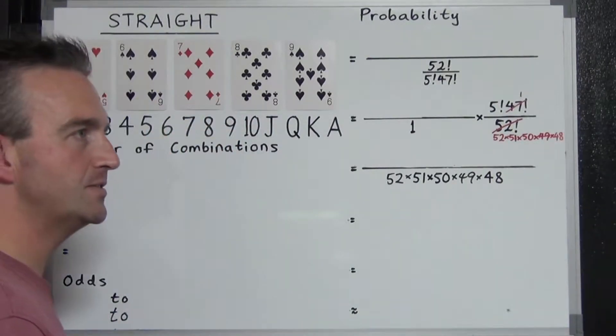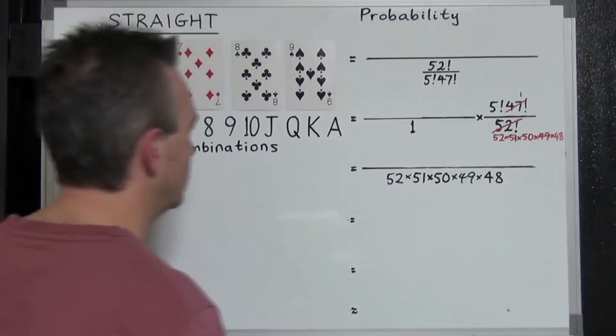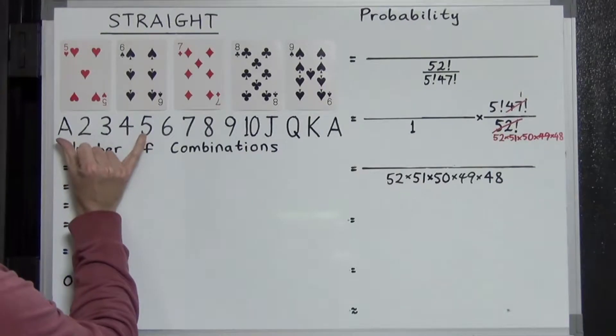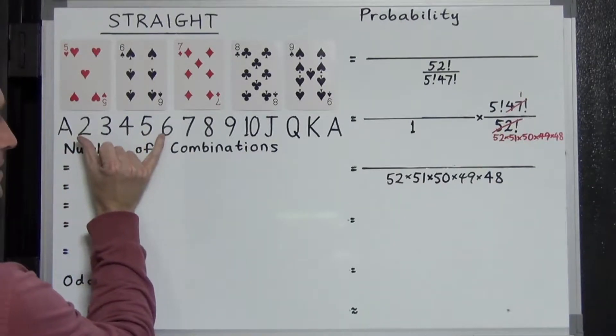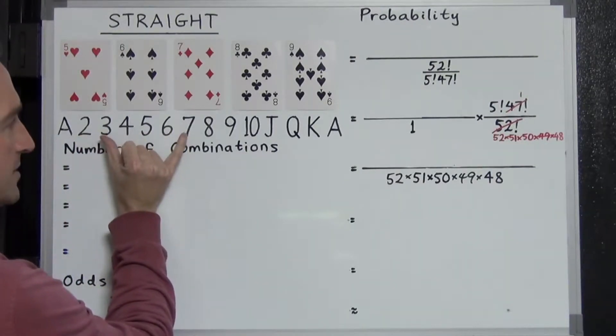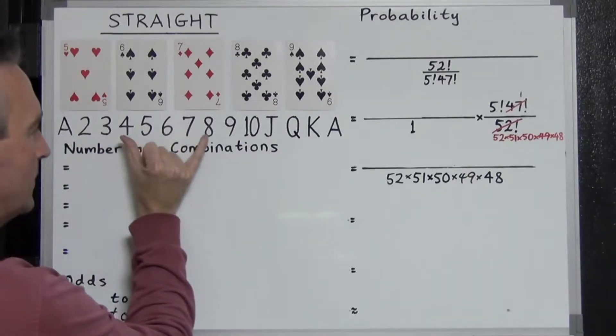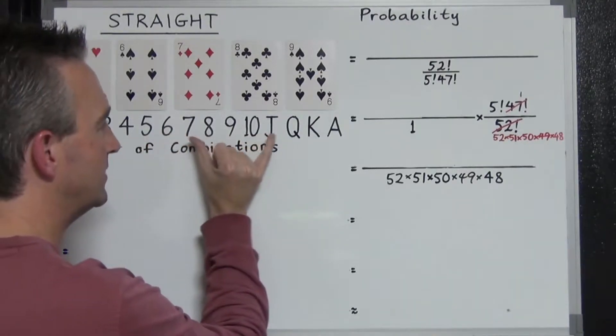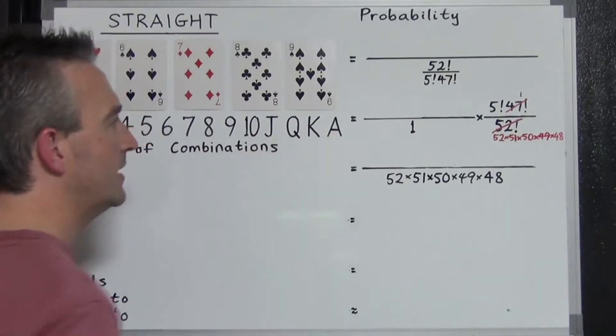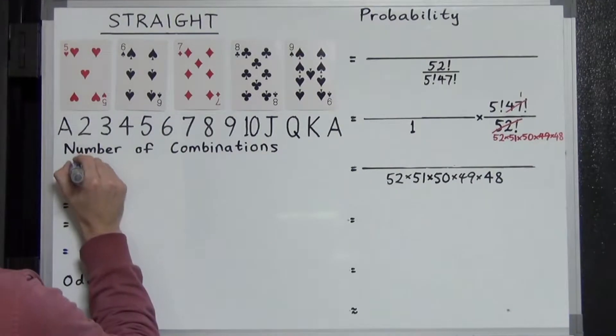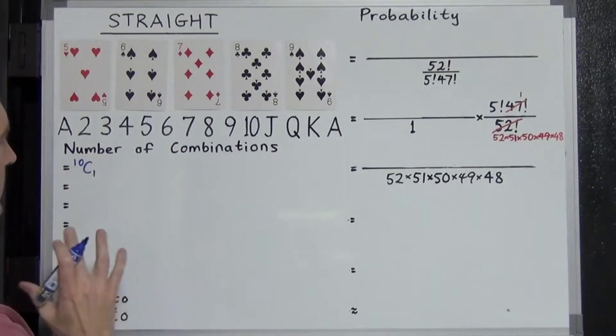So how many possible combinations of straights are there? Let's take a look. So for the sequences, we can have ace, two, three, four, five. We could have two, three, four, five, six. We could have three, four, five, six, seven. If we count all those, we get one, two, three, four, five, six, seven, eight, nine, ten. There are ten possible sequences of straights. So straight away we have 10C1.